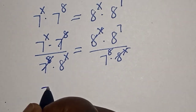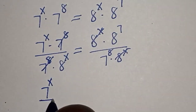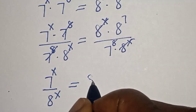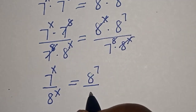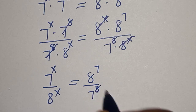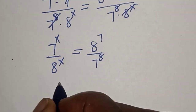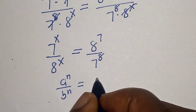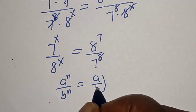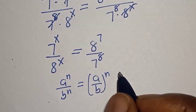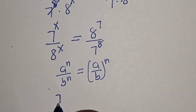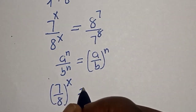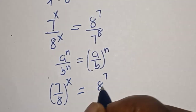We have 7 to the power of x divided by 8 to the power of x, equal to 8 to the power of 7 divided by 7 to the power of 8. Take note of this rule: a raised to power n divided by b raised to power n is equal to (a over b) raised to power n.